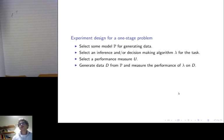So for any one-stage problem, you can think about a general way of doing it. First you have to have some model for generating data, which can be parameterized by the selected model. And we select some decision-making algorithm lambda that has some parameters and some performance measure U that we measure at the end of the experiment.